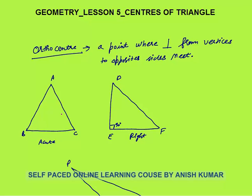Hello, this is Geometry Lesson 5. I will discuss centers of a triangle. The first center is the orthocenter — this is the point where perpendiculars from vertices to opposite sides meet. These perpendiculars are also called altitudes — they are the same thing. In an acute angle triangle, the orthocenter will lie inside the triangle.